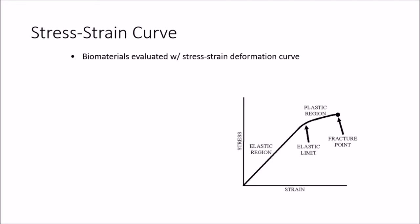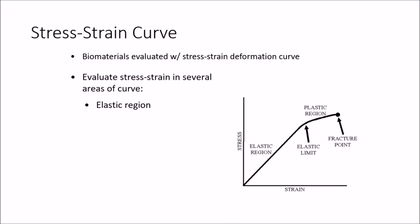If we look at the stress-strain curve, which we talked about in class, we have several different regions on this curve. We can evaluate all biomaterials within how the material changes or deforms along this stress-strain curve. The elastic region is the region of the curve where if the material is stretched, it will return back to its original resting length. So the material will stretch, but as stress is applied and it strains — i.e., it undergoes a change in length — it will return back to its original resting length. When we get to the elastic limit, there is a return to original length with no structural damage.